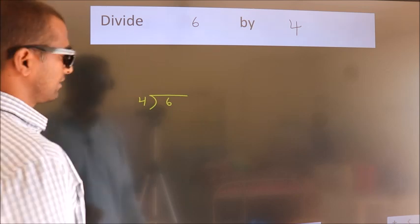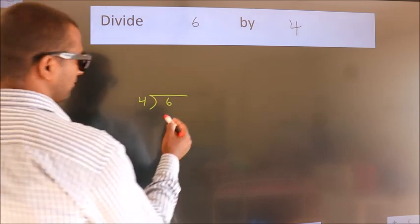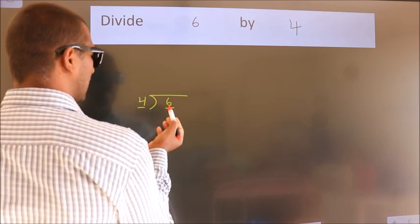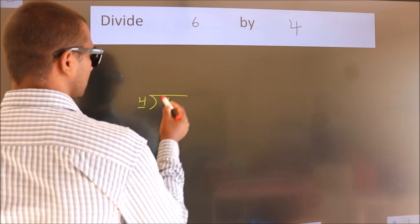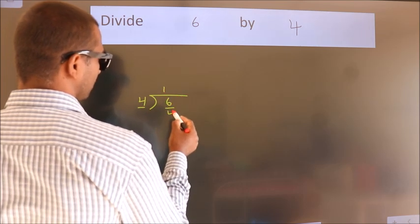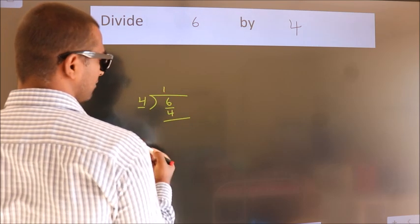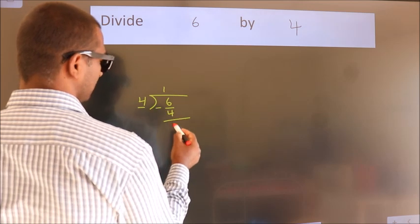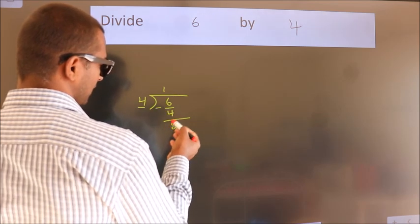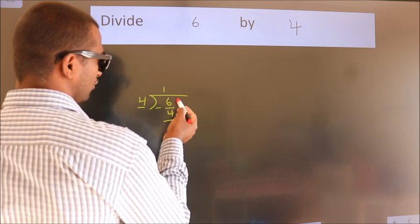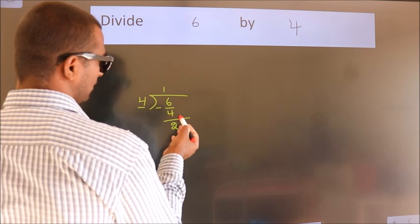Next. Here we have 6, here 4. A number close to 6 in the 4 table is 4 — 4 once 4. Now we should subtract. We get 2. After this, there are no more numbers to bring down.